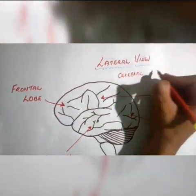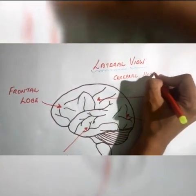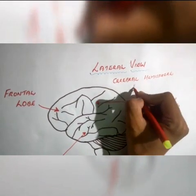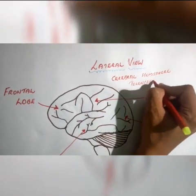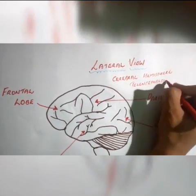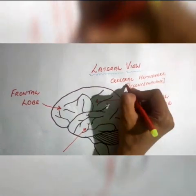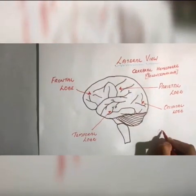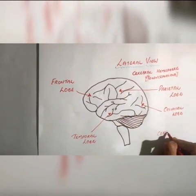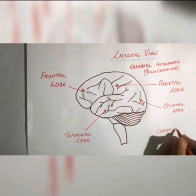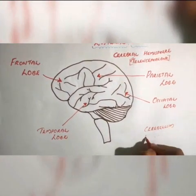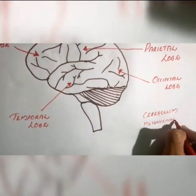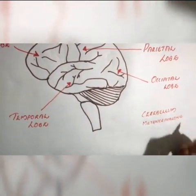The cerebral hemisphere originates from the telencephalon, which is a term from embryology. We have the cerebellum, which is part of the metencephalon. The pons is also part of the metencephalon. The telencephalon and the metencephalon are terms of embryology.